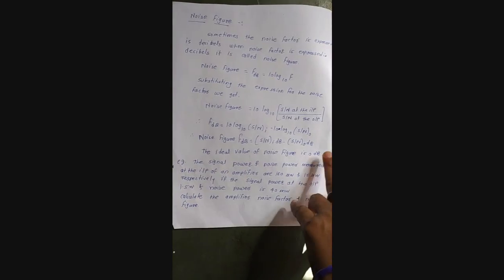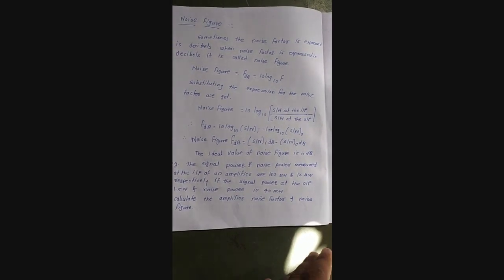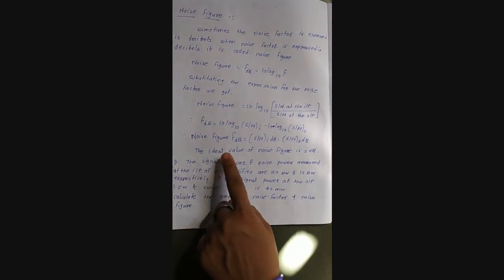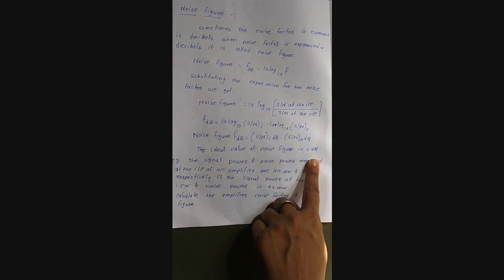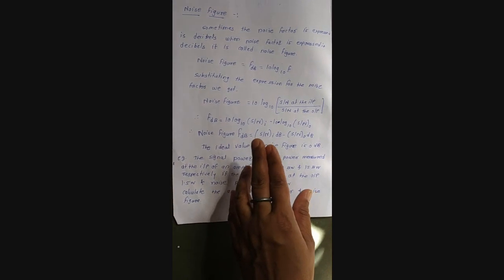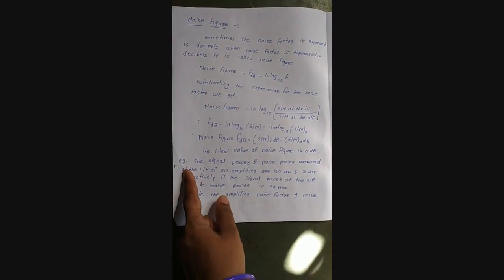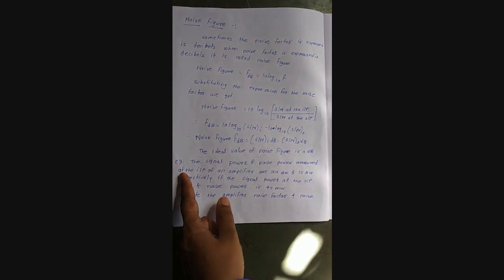The ideal value of noise figure is zero dB. We know that whenever the signal-to-noise ratio at the input side equals the signal-to-noise ratio at the output side, that is considered the ideal condition. For that purpose, the ideal value of noise figure is zero dB. Now, by taking one example, we are going to calculate the noise figure and noise factor mathematically.